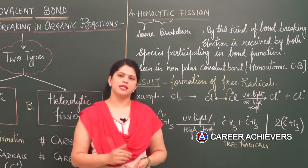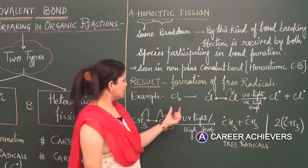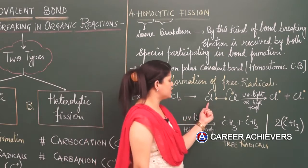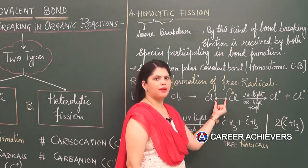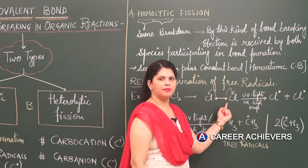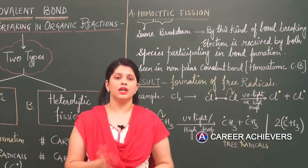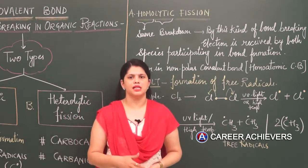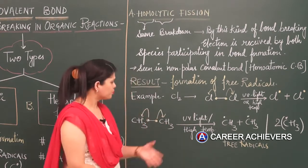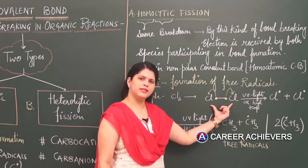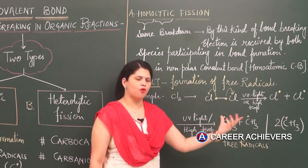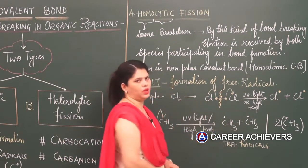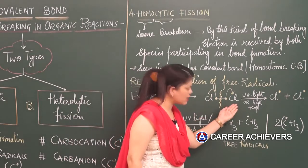For example, if we take the covalent bond in the chlorine molecule (Cl₂), the shared pair of electrons is pulled with equal force by both atoms because both sides have the same atom — there is no electronegativity difference. So when this bond breaks, it breaks exactly equally: neither atom gets both electrons. Instead, the shared pair splits 50-50, one electron going to each chlorine atom.